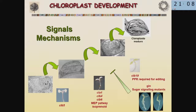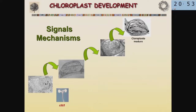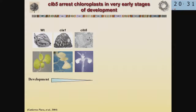We have taken different approaches, but one that has been very interesting is the characterization of specific mutants that affect chloroplast differentiation at different stages. Today I'm going to concentrate on one example, and I hope to give you an idea of how chloroplasts can actually modulate the development of the plant. This is the characterization of a mutant we call CLB5, for chloroplast biogenesis mutant 5. The main issue of this mutant was that it affects chloroplast differentiation in the very early stages, where chloroplasts resemble proplastids.